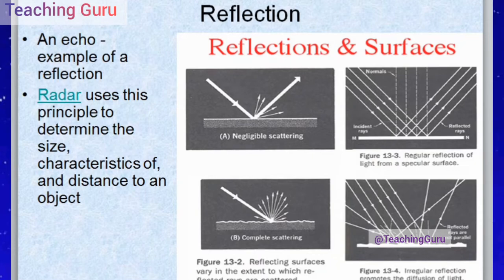There are many examples of reflection. An echo is an example of reflection — when you speak in a hollow room, your sound wave rebounds off the walls and you hear the echo of your sound. Another example is radar: radar uses this principle to determine the size, characteristics, and distance of an object, and is used in many defense equipments.